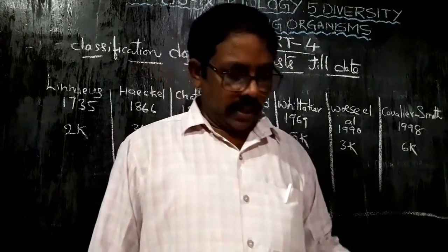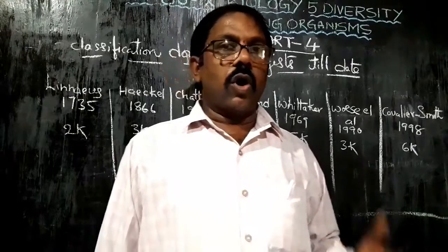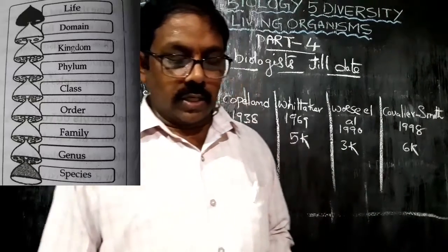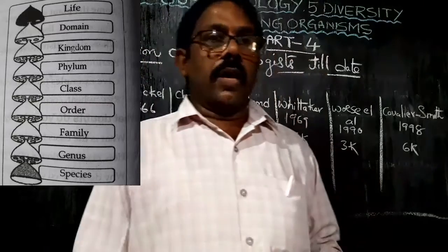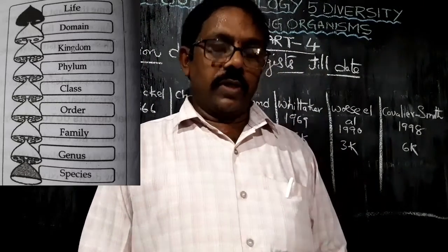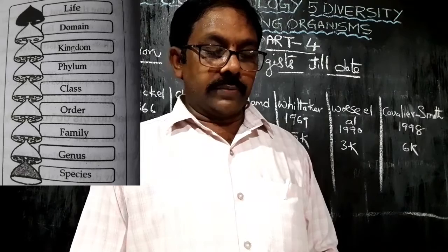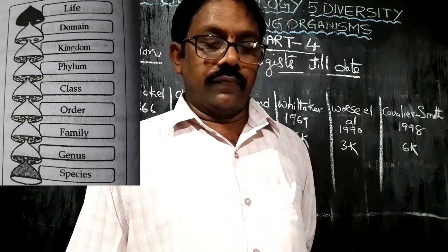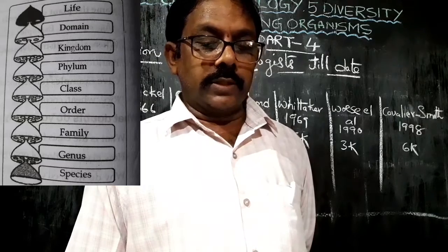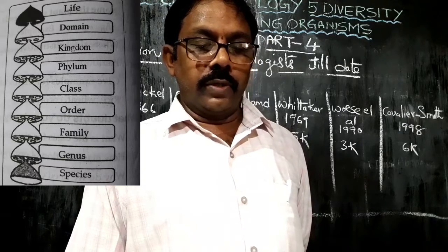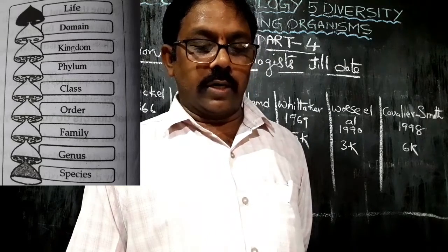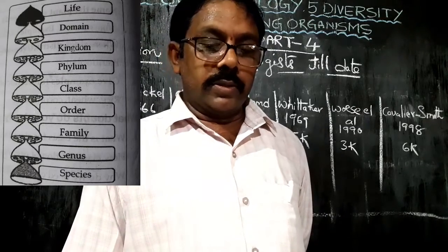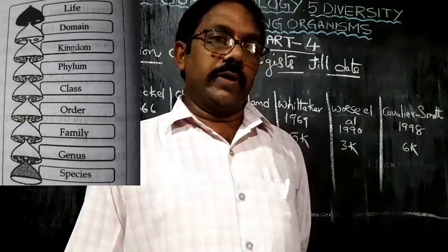The classification order is as follows: Life, Domain, Kingdom, Phylum, Class, Order, Family, Genus, and finally Species. You must read this classification hierarchy again and again to get a good understanding.